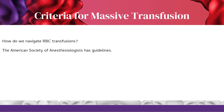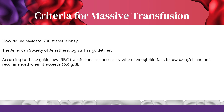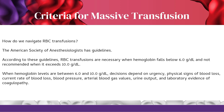The American Society of Anesthesiologists has guidelines for RBC transfusions. They are necessary when hemoglobin falls below 6.0 g/dL and not recommended when it exceeds 10.0 g/dL. When hemoglobin is between 6.0 and 10.0 g/dL, decisions depend on urgency, physical signs of blood loss, current rate of blood loss, blood pressure, arterial blood gas values, urine output, and laboratory evidence of coagulopathy.